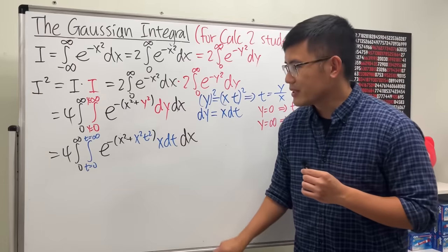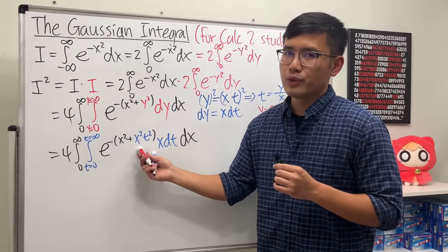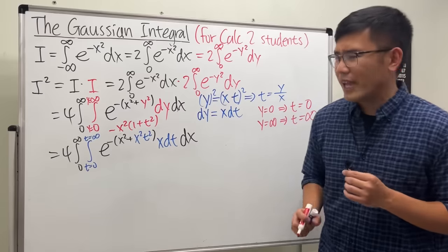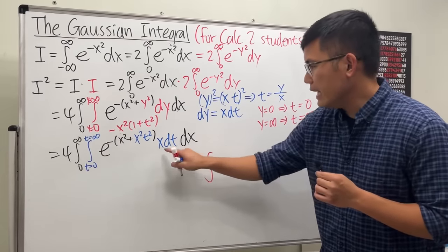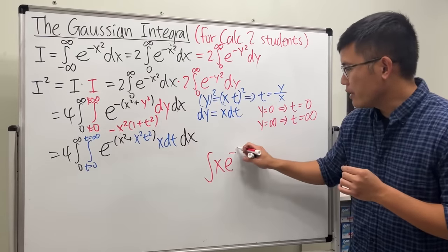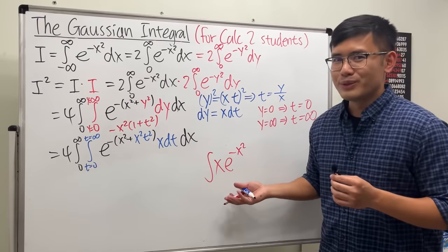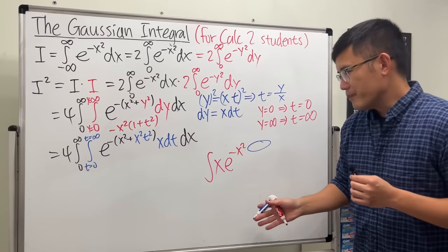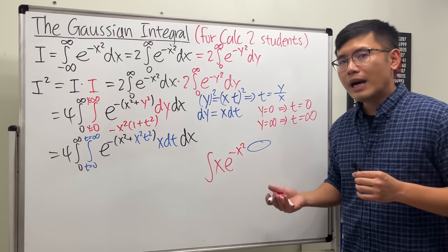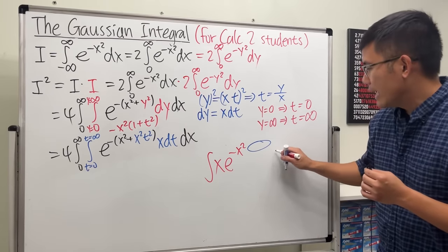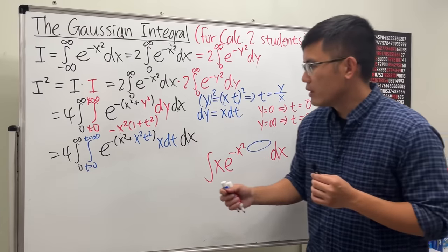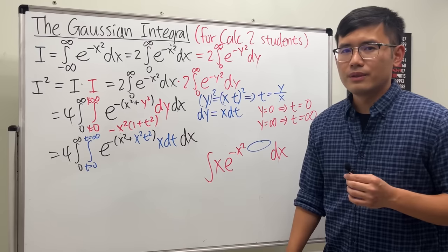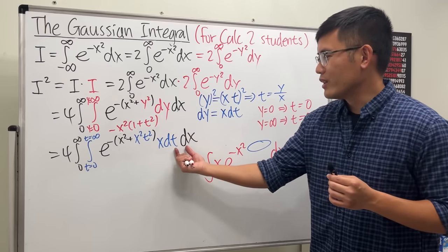We can factor out x squared to get x squared times (one plus t squared). So the integrand becomes x times e to the negative x squared (one plus t squared), with dy replaced by x dt, giving an x squared factor. We notice that x times e to the negative x squared is something we can integrate with a u-substitution, and (one plus t squared) is just a constant in the x world.